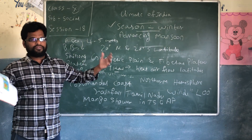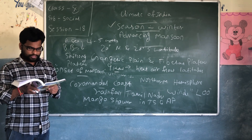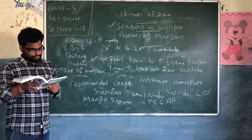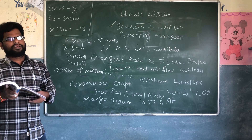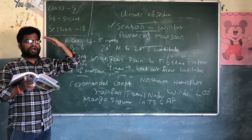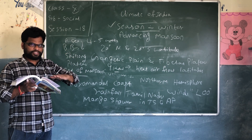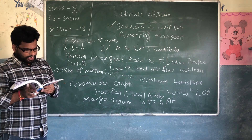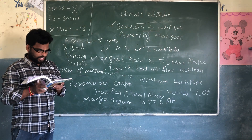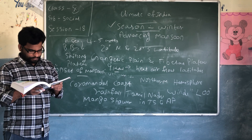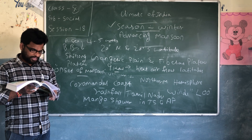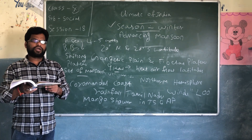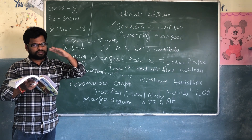Heavy rainfall occurs along the West Coast due to the Western Ghats, and in North East India due to high peak hills. The Tamil Nadu Coast — Coromandel — however, remains mostly dry during this period, as it is in the rain shadow area of the Arabian Sea branch and is parallel to the Bay of Bengal branch.